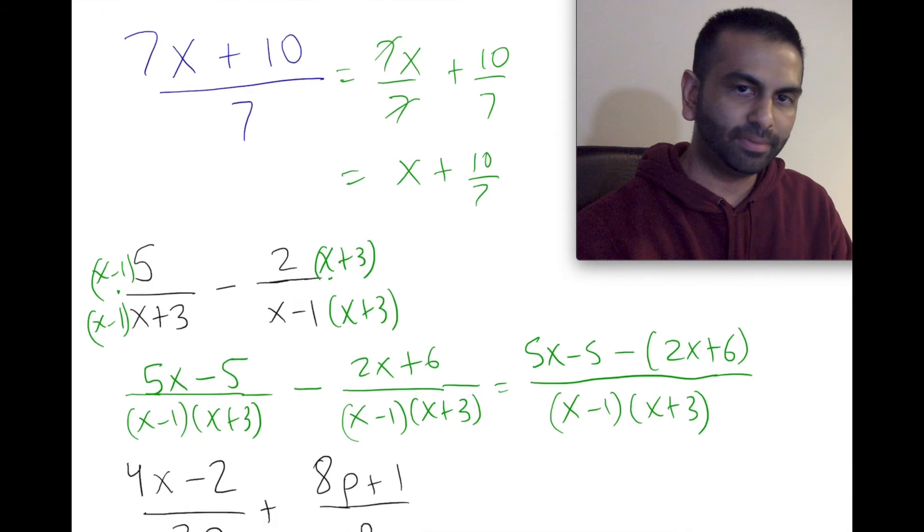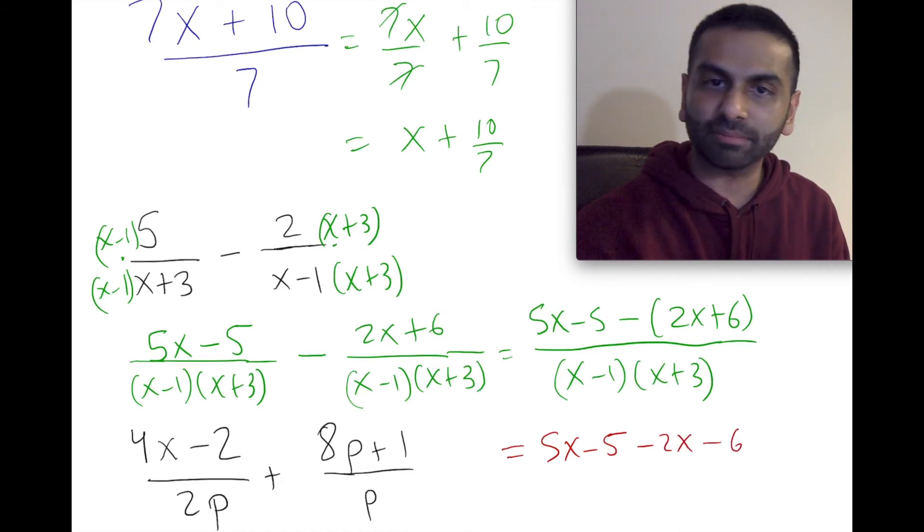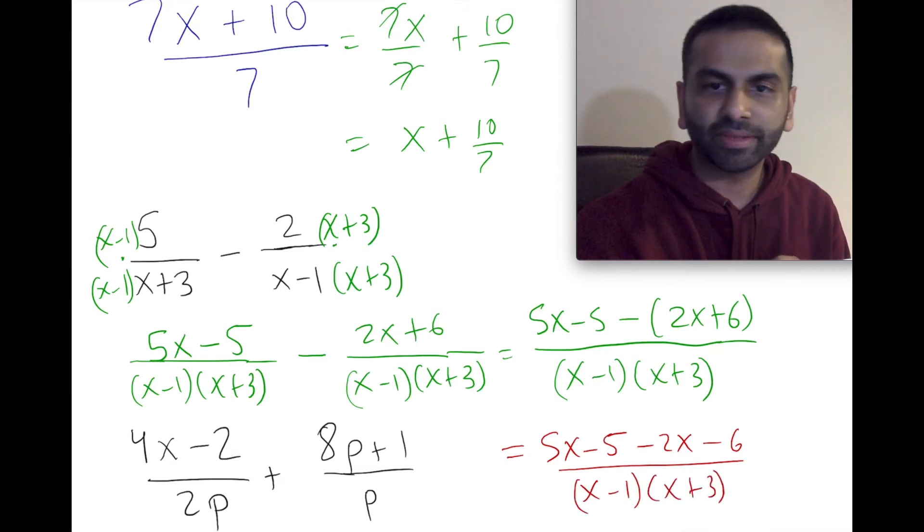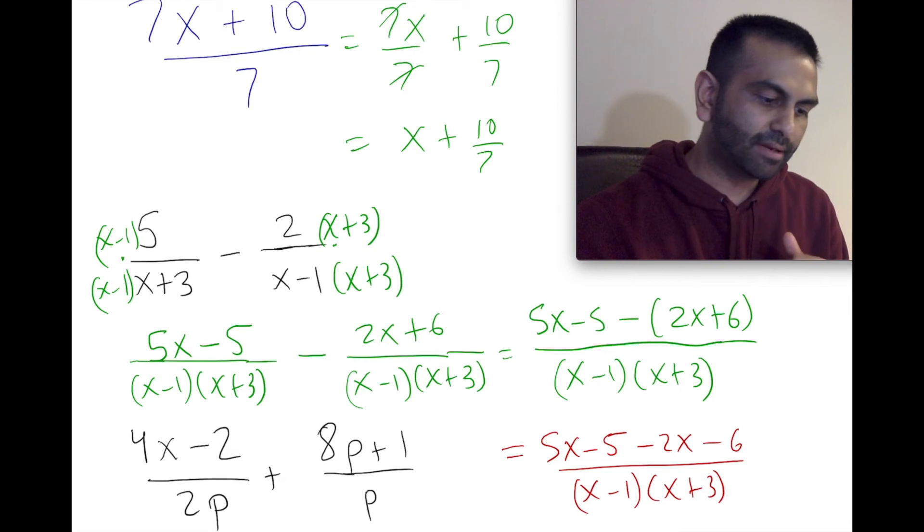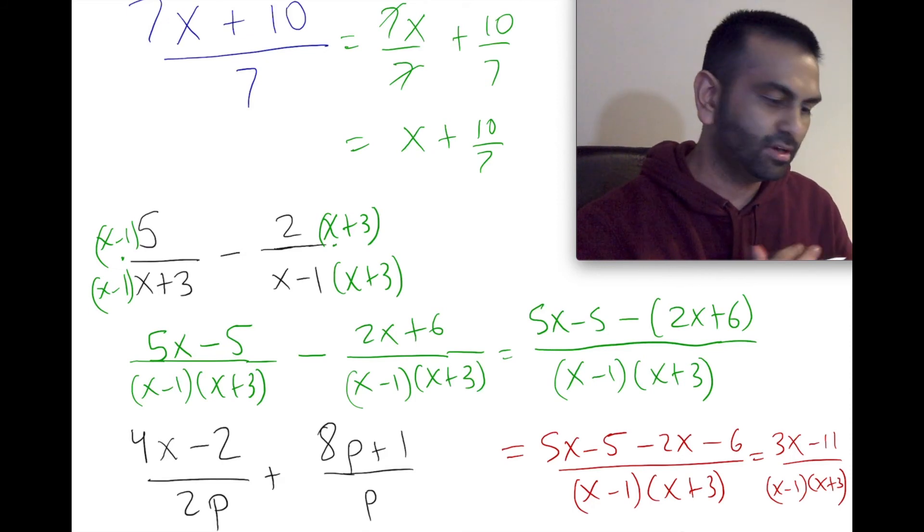In the next step, we're going to simplify as 5x minus 5 minus 2x minus 6, all divided by that same denominator (x minus 1)(x plus 3). Finally, we combine like terms on the top: 5x minus 2x is 3x, and then we have minus 5 minus another 6, so overall that's minus 11. So we get (3x minus 11) over (x minus 1)(x plus 3). That's how you can add or subtract fractions when there's variables involved.